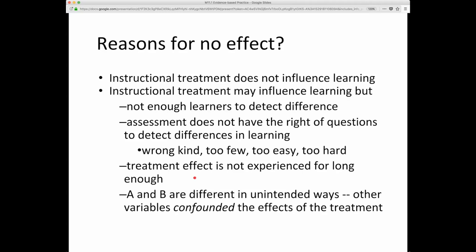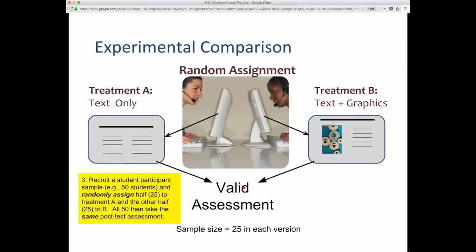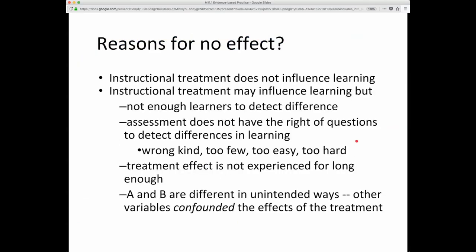Another possibility is that the treatment could work, but it wasn't really experienced long enough to have an impact. And finally, it could be that A and B are different in unintended ways, and other variables have confounded the effects of the treatment. Maybe the graphics are better, but for example, you might have tried to control for the amount of information by eliminating some text in the text situation. Going back to this image, we have a little bit less text than here. Maybe it's because of a particular piece of text that you eliminated, that if you had included it here and left something else out, you would have gotten an effect. So that would be a so-called confound in the experiment, that there's some other unintended way in which A and B are different.